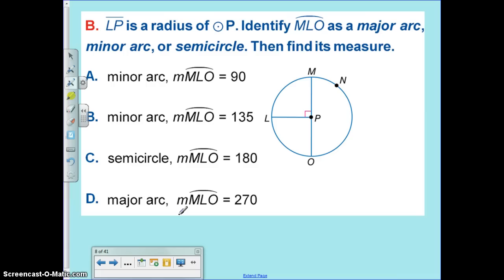LP is the radius of circle P. Identify MLO, so this arc here, as major, minor, or semicircle. And I think right away you're identifying that probably as a semicircle.